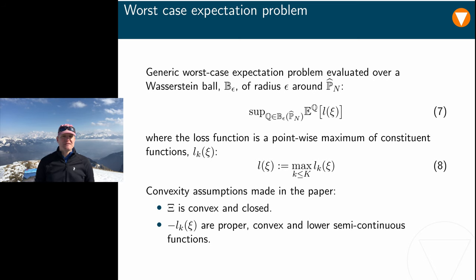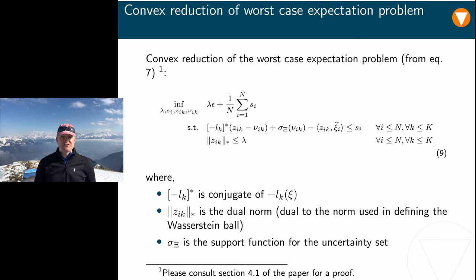If these requirements are met, for any non-negative Wasserstein radius, the worst-case expectation is equal to the finite convex program shown here. In the first constraint of the stated program, -lₖ* denotes the conjugate of the negative k-th component of the loss function. The norm of Cᵢₖ is the dual norm of Cᵢₖ, that is the norm dual to the one that was used in the definition of the Wasserstein distance, and σ_Ξ is the support function of the uncertainty set.